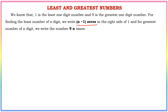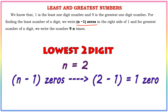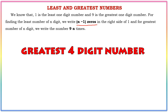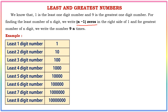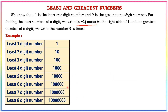If you want to find the least 2-digit number, it is 10. For the least 7-digit number, it is 1 followed by 6 zeros. For the least 9-digit number, it is 1 followed by 8 zeros. This pattern gives us the least number for any number of digits.